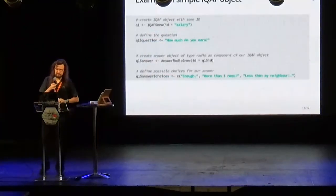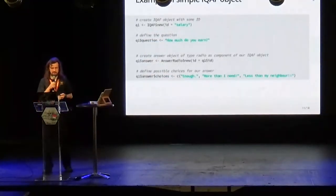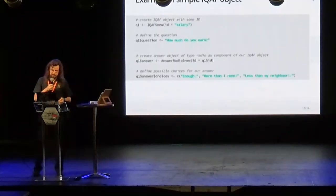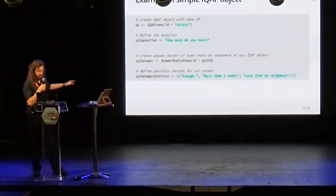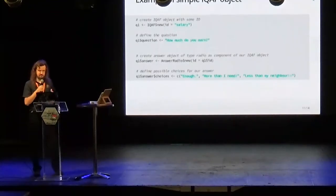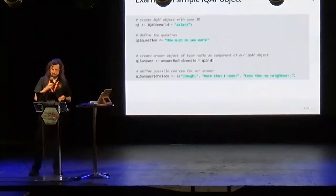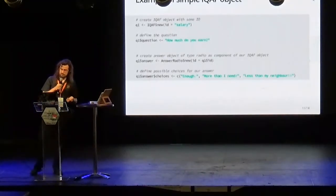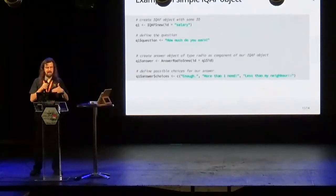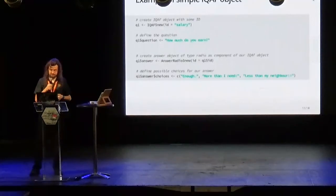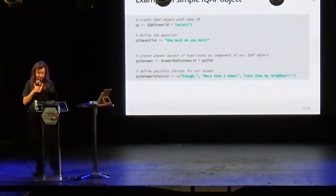Let's define a very simple IQAF object with two components. The first line of code creates the new object. The second line defines the question: how much do you earn? The third line defines the type of the answer, and last but not least, I'm defining possible choices: enough, more than I need, less than my neighbor.